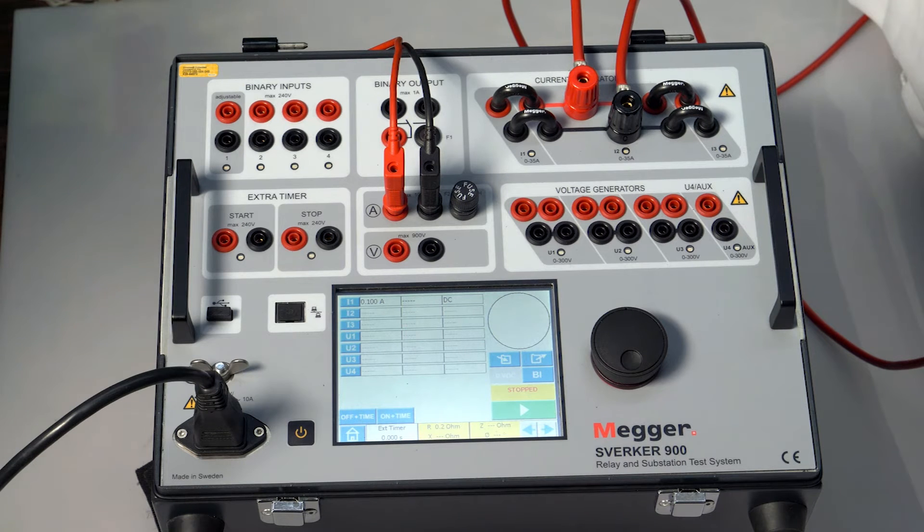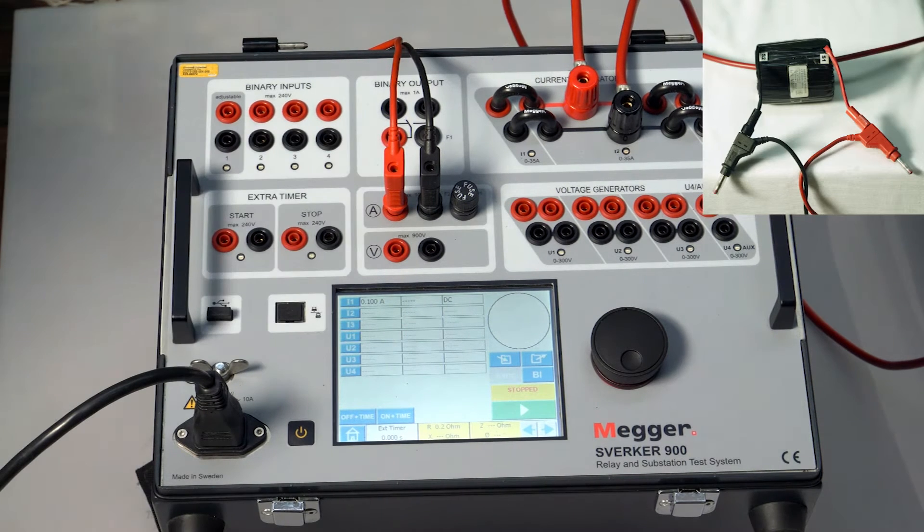The CT secondary wires are connected to the ammeter of the test kit. The unused cores of the CTs have to be shortened in the primary injection method. We will enable the hold on stop option by pressing the ammeter.